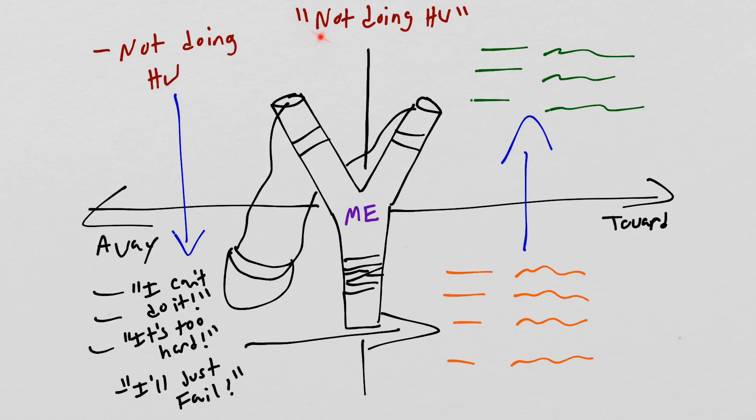So here again, we've started with a behavior pattern. We began the matrix in the top left-hand quadrant with away moves. We move down to inner content, over to exploring values, and then up to committed actions.